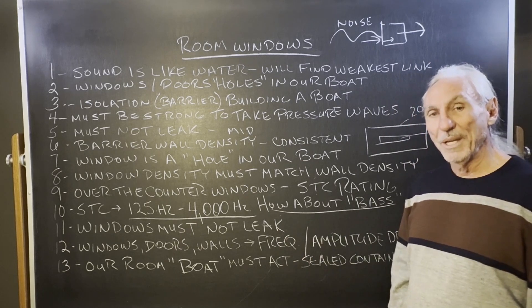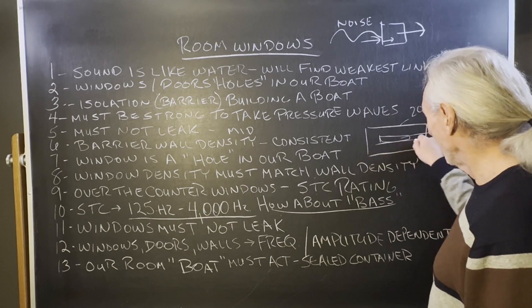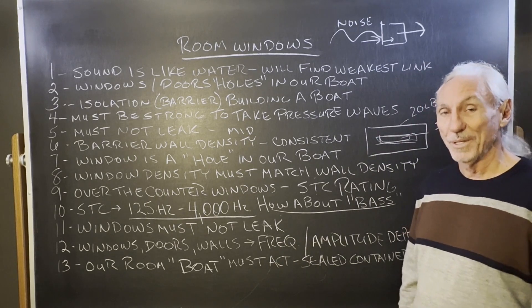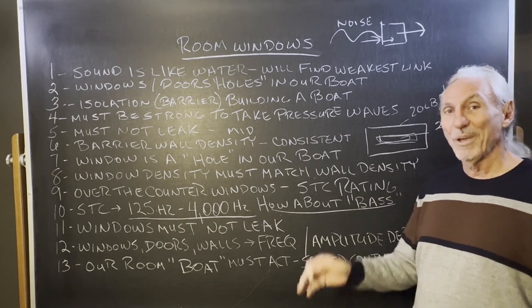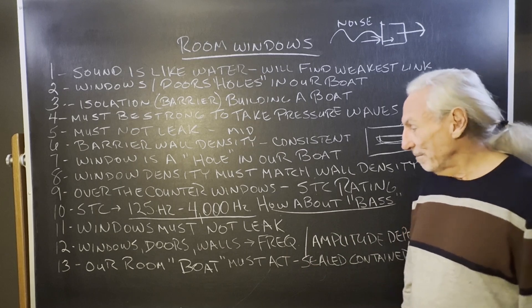Secondly, along with the density requirement, the window must not leak. So it's got to seal correctly. That's a little bit easier to do than with a door, but the seal is critical. So we have to have the density and we have to have the seal to keep air from leaking.